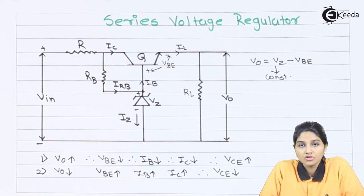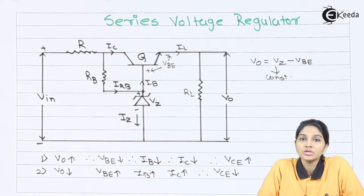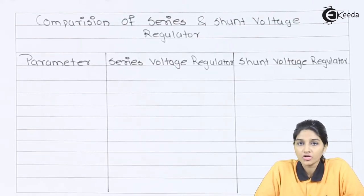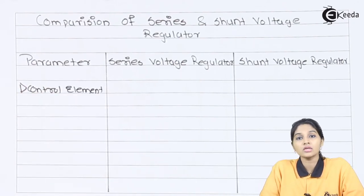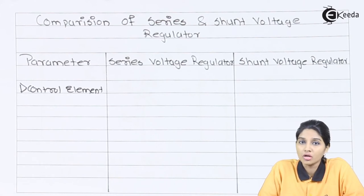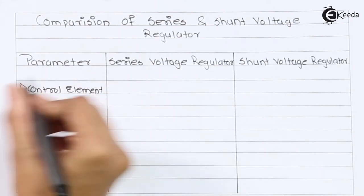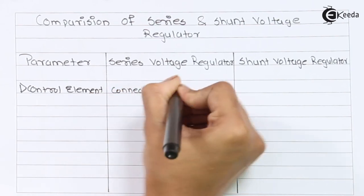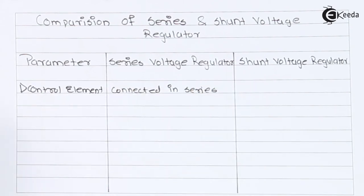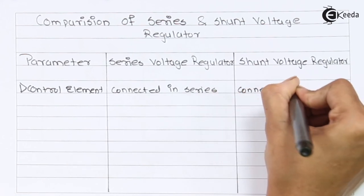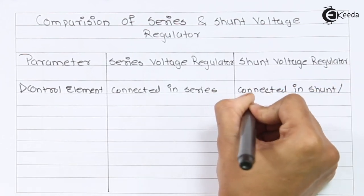Now we are going to see the difference between a series voltage regulator and a shunt voltage regulator, comparing them on the basis of various parameters. The first parameter is the control element. In a series voltage regulator, for example in the transistorized series regulator, the transistor is connected in series with the load resistance. In a shunt voltage regulator, the control element is connected in shunt, or parallel, with the load.